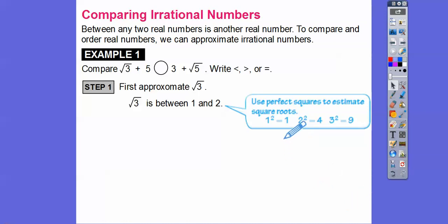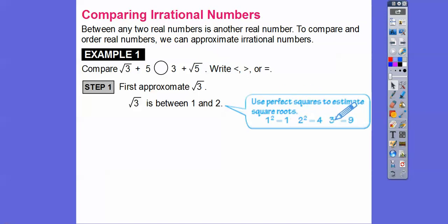So we're just using the perfect squares to help us guesstimate. The square root of 1 is 1, the square root of 4 is 2. Now, since we have the square root of 5, that's in between these two guys, so it's going to be between 2 and 3. So the square root of 5 is some number in between 2 and 3.